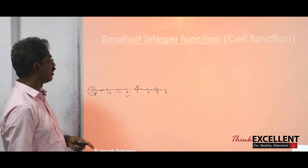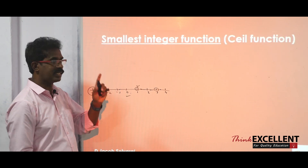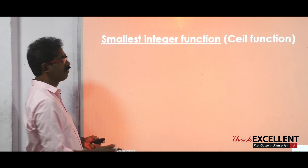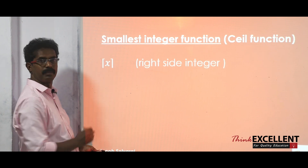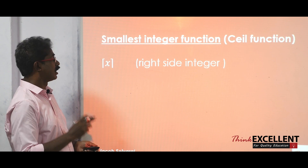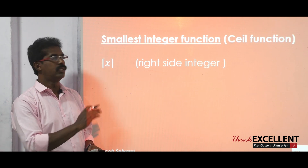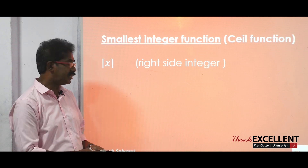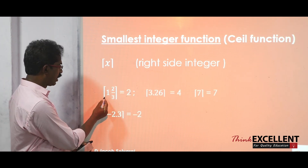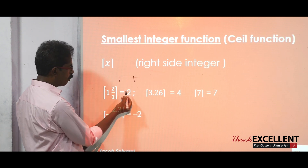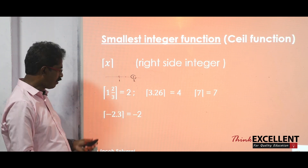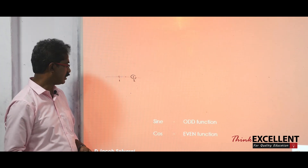The next one is the smallest integer function, or ceiling function. The symbol looks like an upside-down floor symbol. In the greatest integer function we took the left side element; here you take the right side integer. Plot the point on the number line and take the right side number. For example, 1⅔ is between 1 and 2, so you take the right side number — the answer is 2.